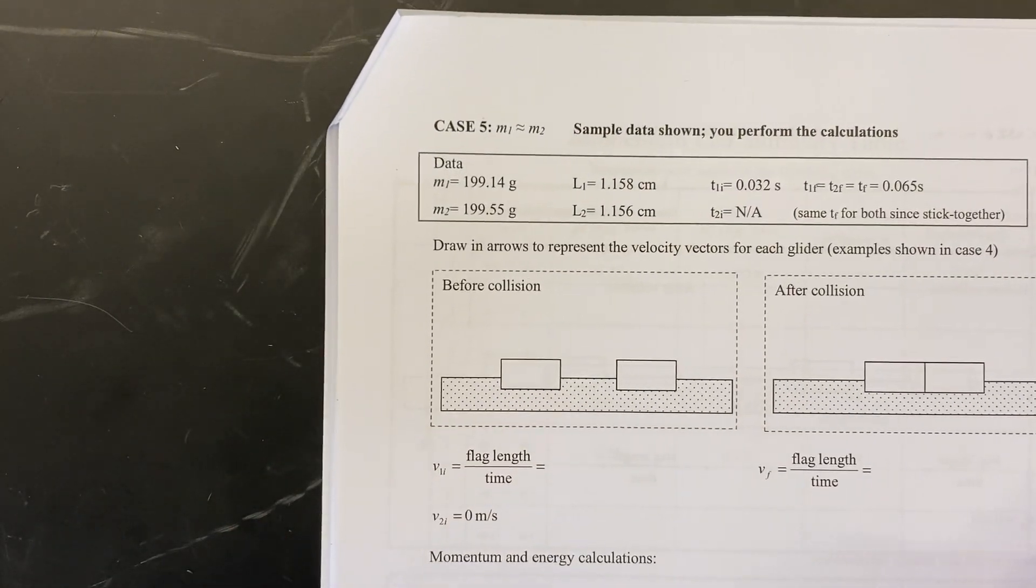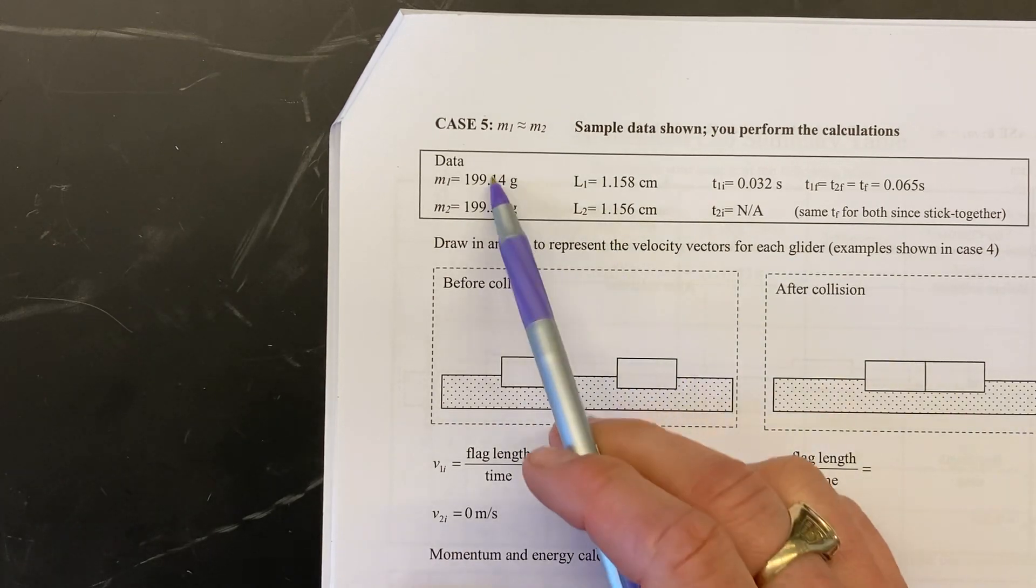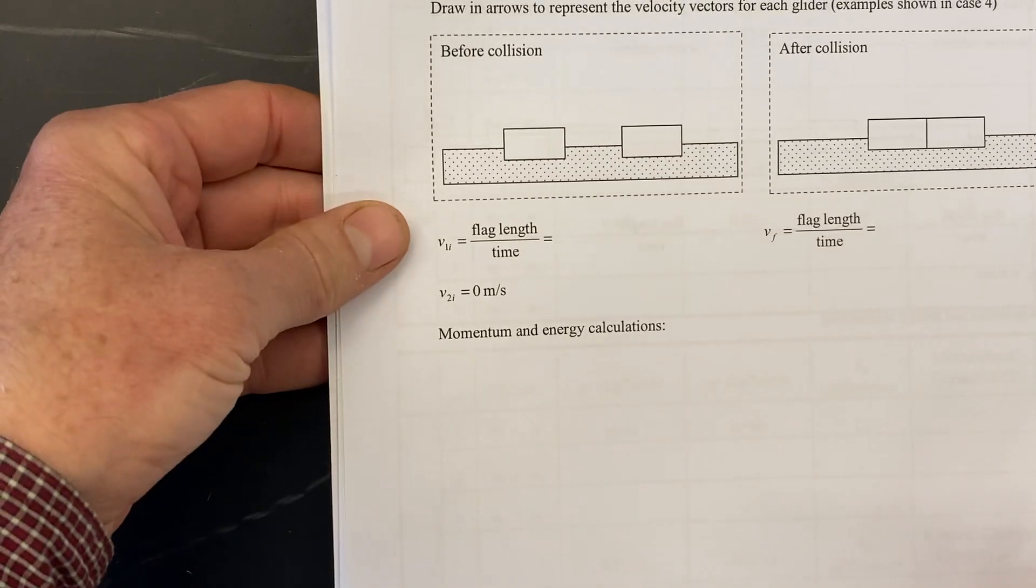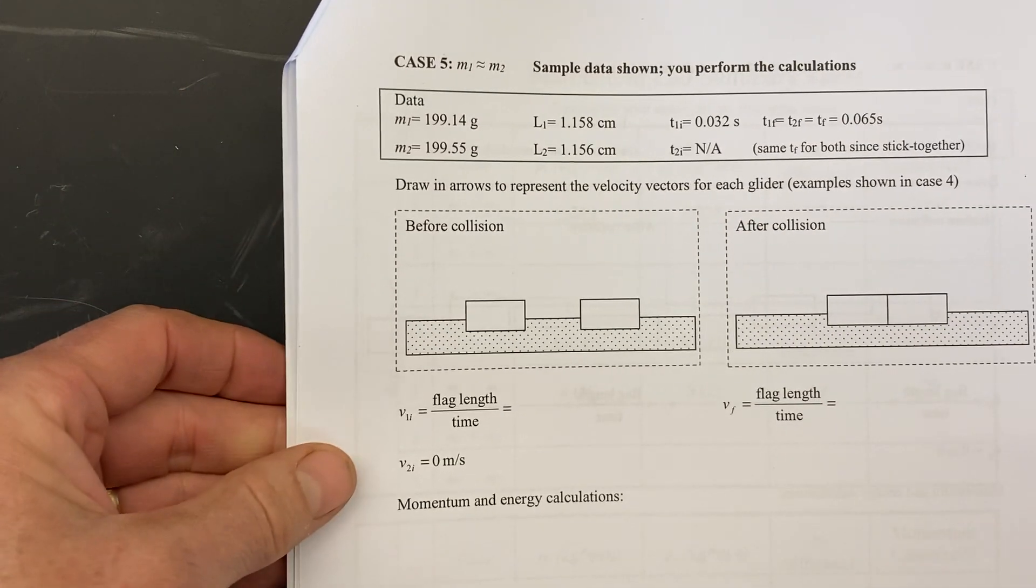And then case five is the one you're going to do the calculations ahead of time. Data provided you go through and do the full calculations. All right contact me if you have any questions.